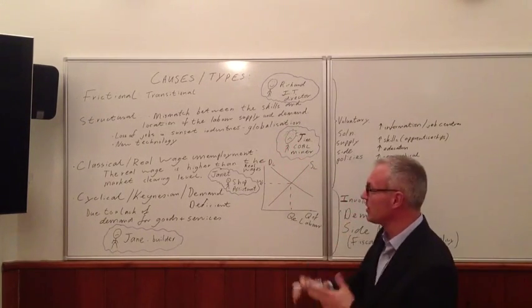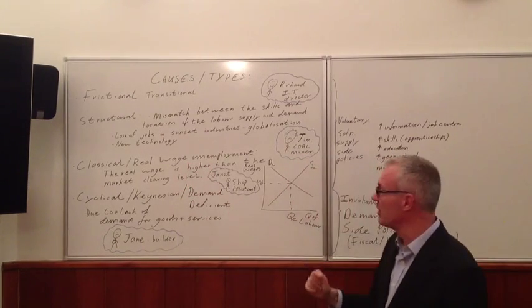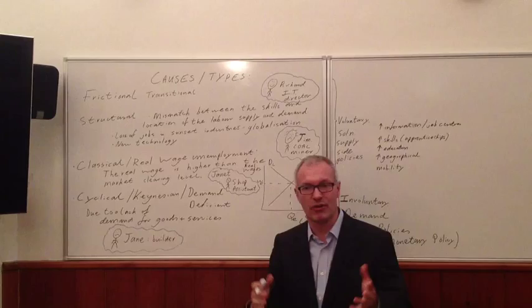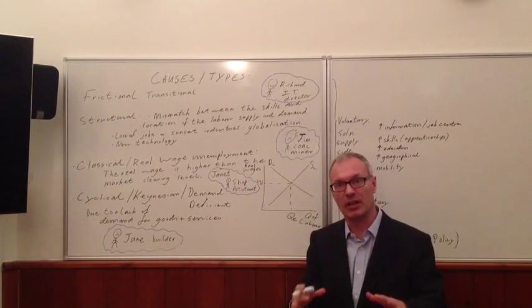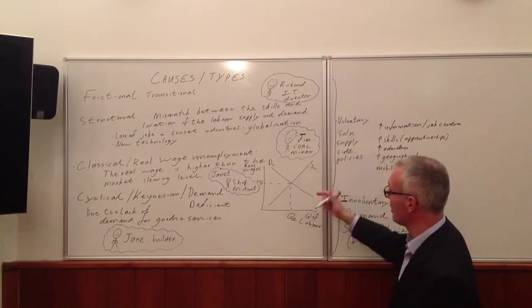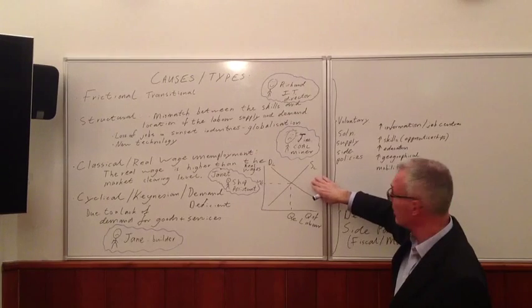The third type of unemployment is classical unemployment, often known as real wage unemployment. This is simply a result of the real wage being higher than the market clearing level. Let's look at our simple diagram. This is a market for hairdressers.